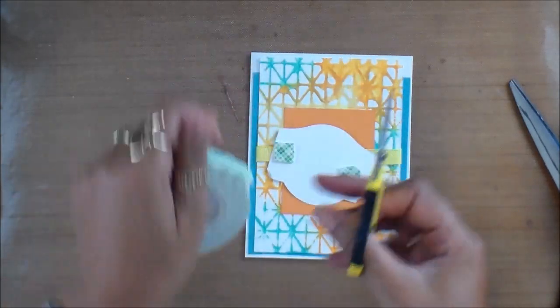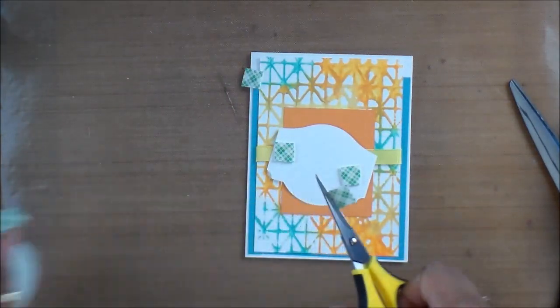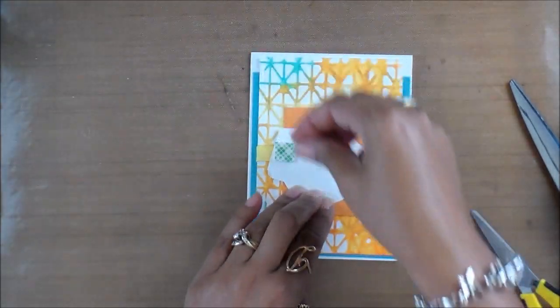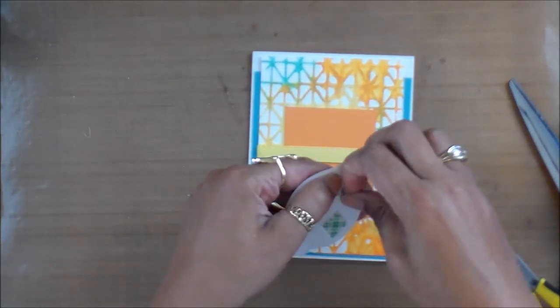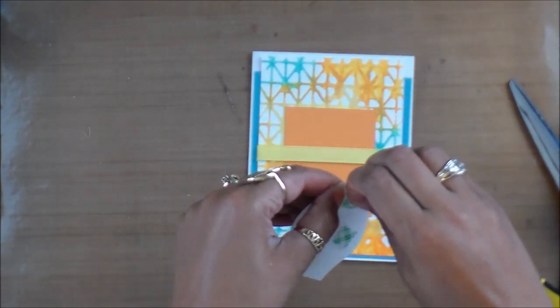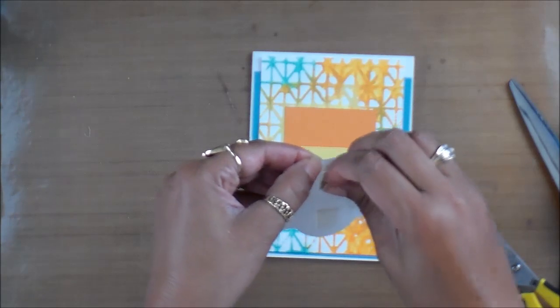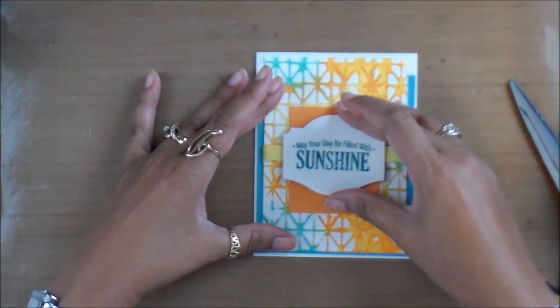Just cut the last two that I need. Throw those on the back of the panel there, on my sentiment. Okay, our card is almost done. Just remove the back of the adhesive there and lay that down onto the front of my card. Alright, let me line that up. Perfect. Sorry, it's getting a little blurry, the camera's not working.